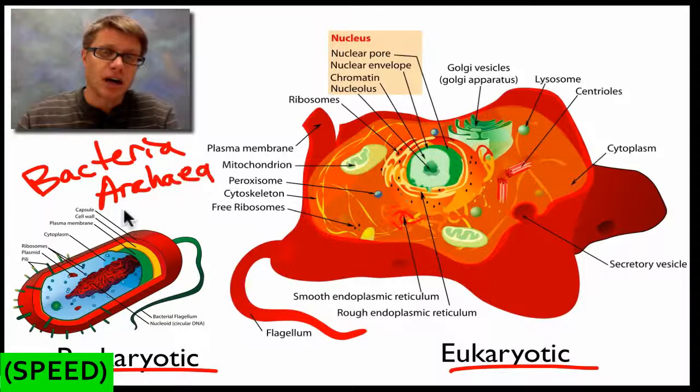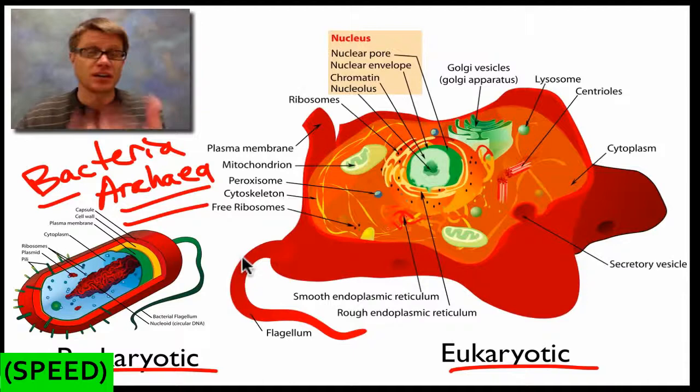What types of things are prokaryotic? Really only two things. Bacteria are going to be prokaryotic, and then archaea bacteria are going to be prokaryotic. Eukaryotic are going to be things that you think of as alive that aren't microscopic. Things like plants, animals, fungus, protists, things like that that are really, really large.